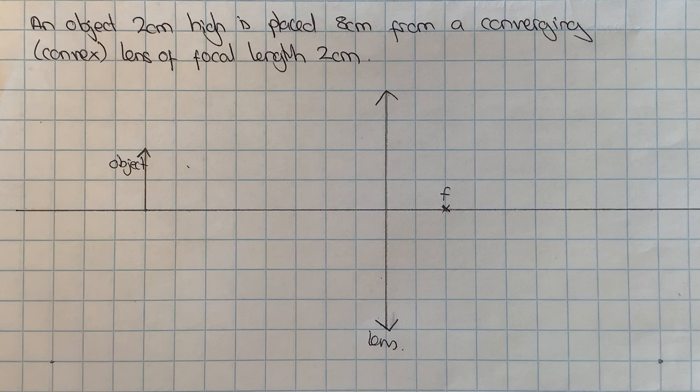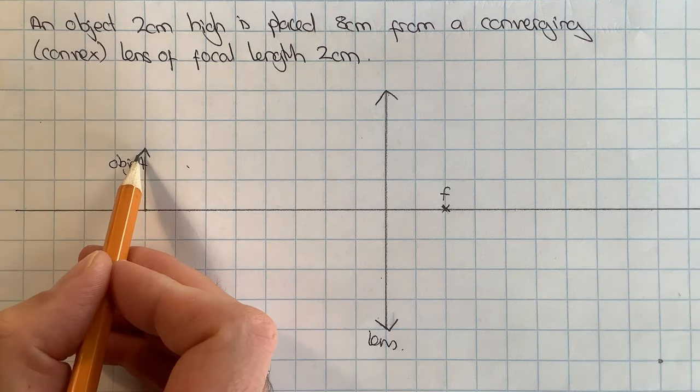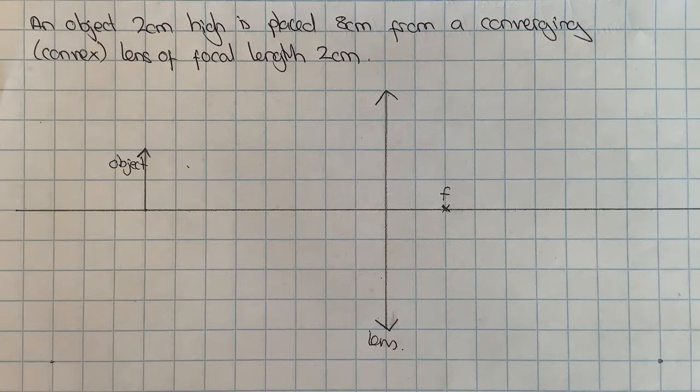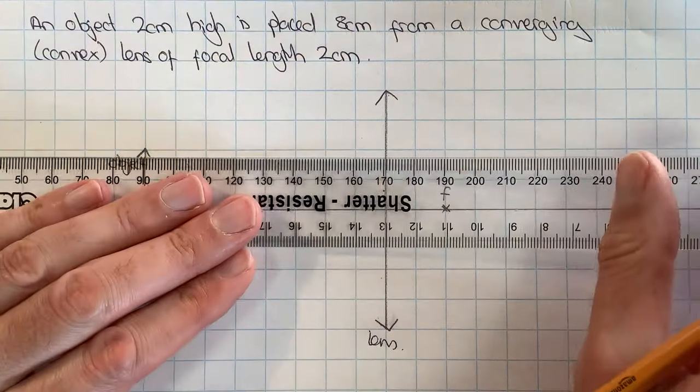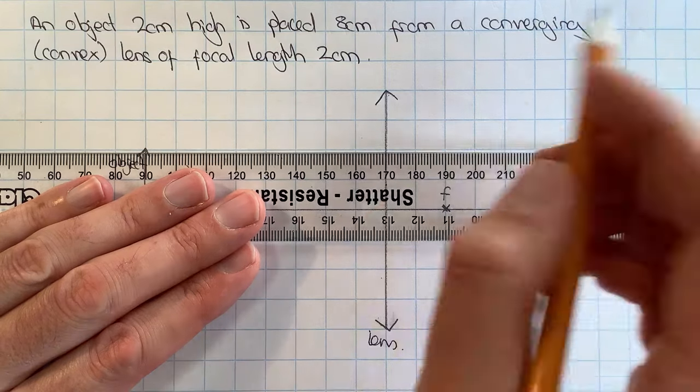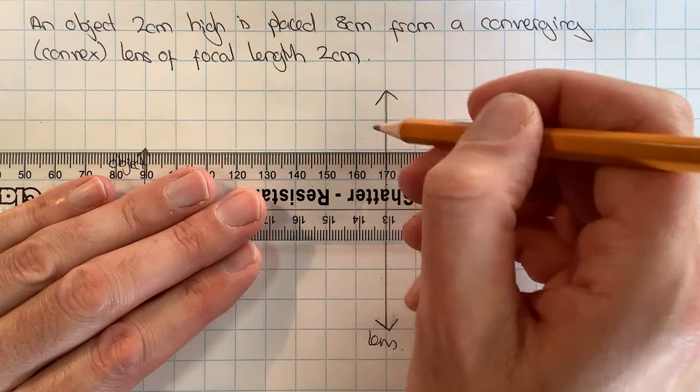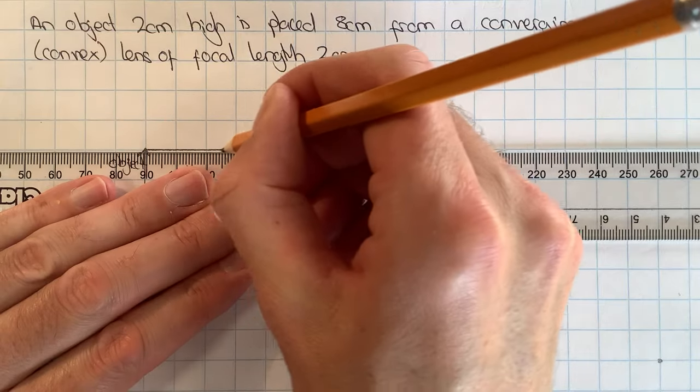So to work out where the image is going to form, I'm going to draw two special rays and I'm going to draw the rays starting from the top of the object. The first special ray which I'm going to draw is going to go from the top of the object parallel to the principal axis until it hits the lens.